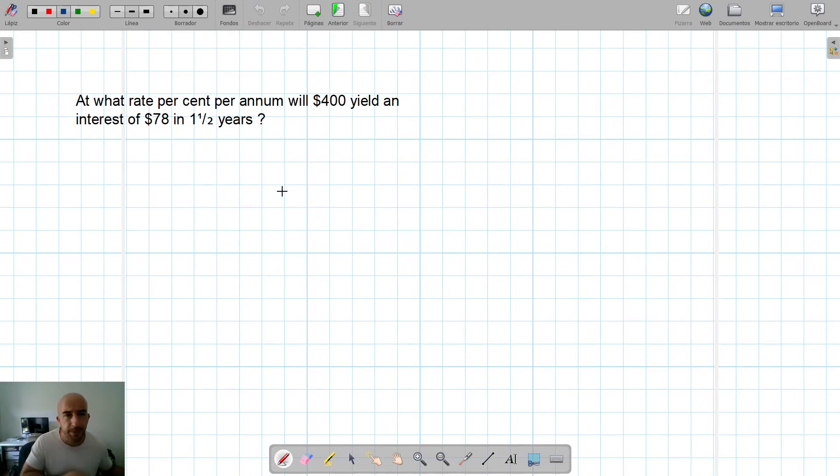At what rate percent per annum will $400 yield an interest of 78 euros in a year and a half? Again, what information do I have? $400 as the principal value. We have the simple interest, which is $78. We have the N, which is 1.5 in years. And we're asked for the interest. We can't get this in the calculator. We can only get SI and SFV. Again, we have to use the formula.